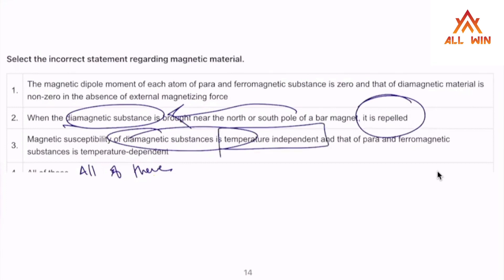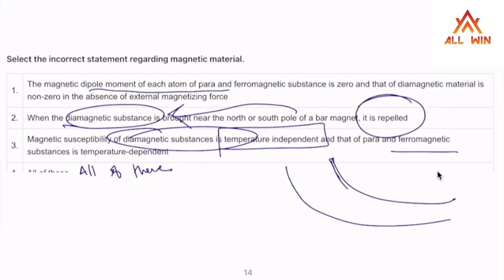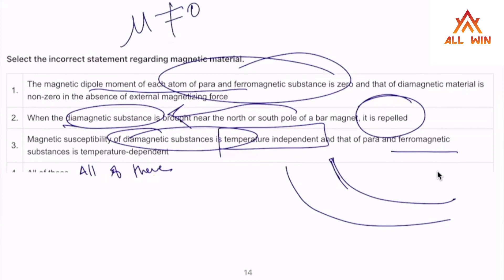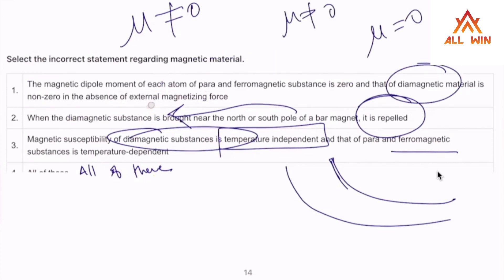If you increase the temperature of a diamagnetic substance, it remains correct — diamagnetic susceptibility is essentially temperature independent. Diamagnetic susceptibility is equal to zero in some contexts, but not equal to zero in others. So option 1 is correct.